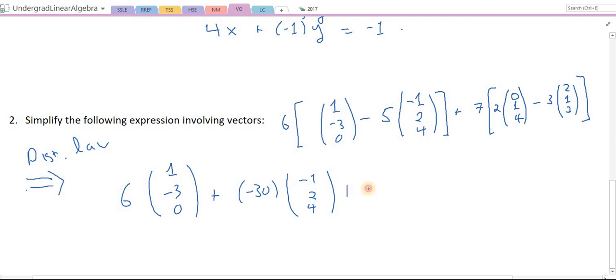Then we have plus... the 7 with the 2 gives me 14, and then here I have (0, 1, 4). And then here I have 7 with minus 3 gives me minus 21, and that gives me (2, 1, 2).